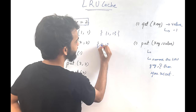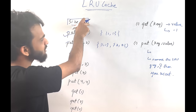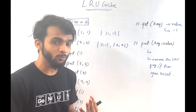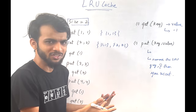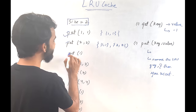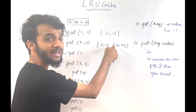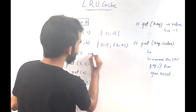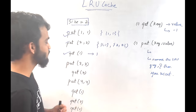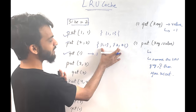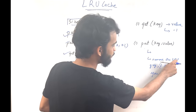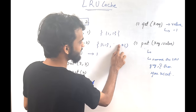The next function is put(2,2). It gets into the cache because capacity is 2 and there's only one element, so there's space. Now the least recently used is (1,1) since 2 was just used. When we call get(1), it returns value 1. Since we just used key 1, key 2 now becomes the least recently used.